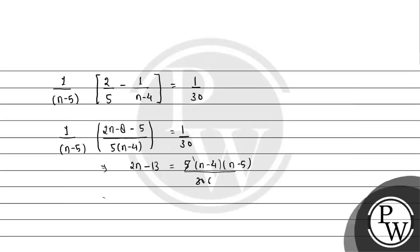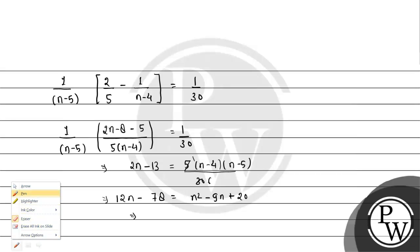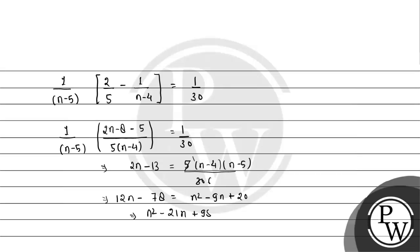Cross multiply करने पर: 30(2N minus 13) equal to 5(N minus 4)(N minus 5)। Simplify करने पर: 12N minus 78 equal to N² minus 9N plus 20। सब एक साइड लाने पर: N² minus 21N plus 98 equal to 0।